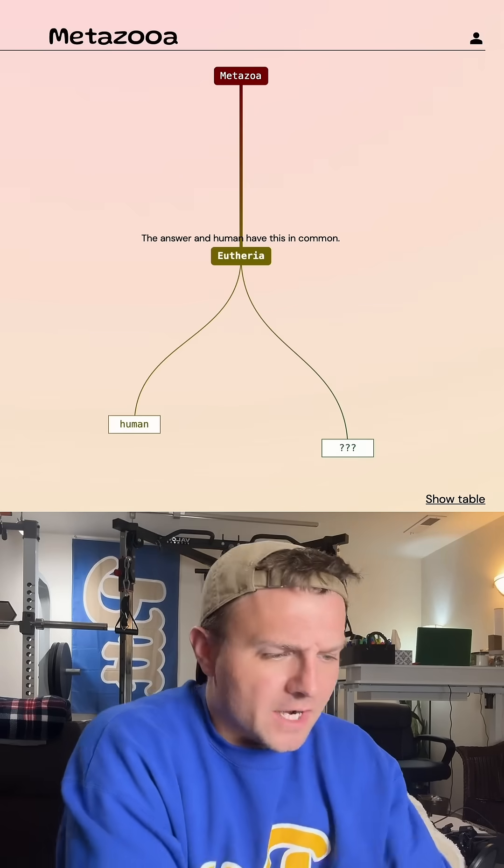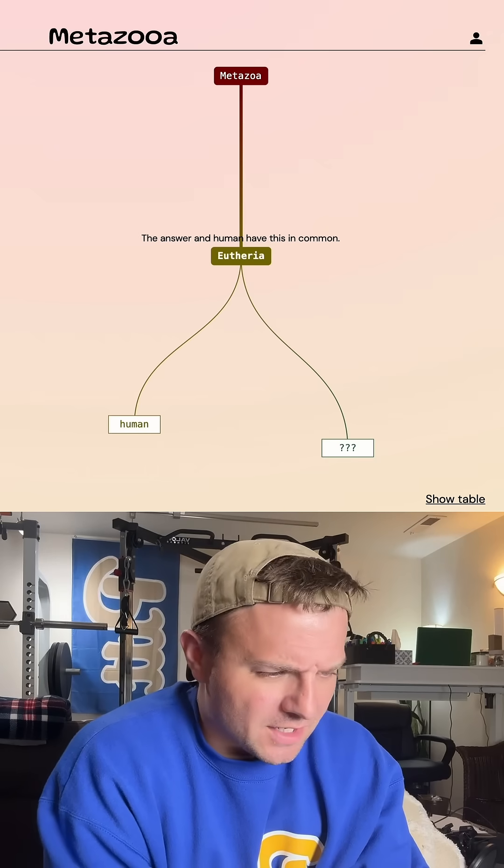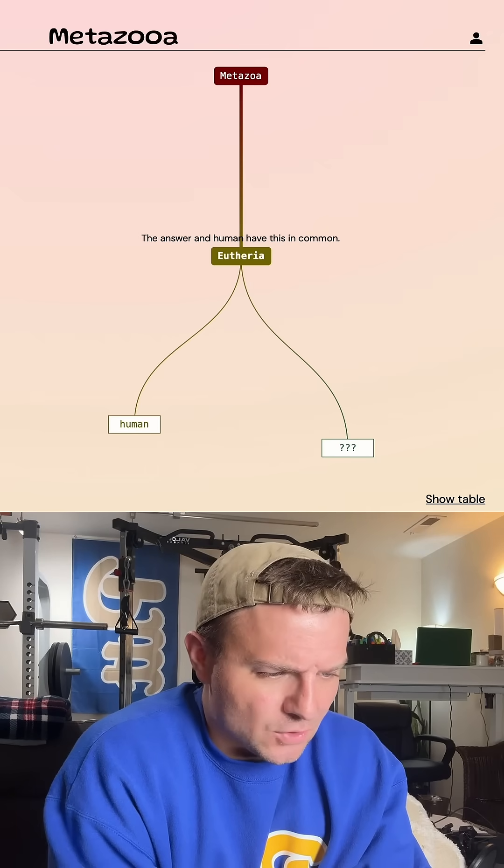Like always, we're going to start out with humans. Alright, so the grouping that this species shares with humans is eutheria. This means it's a placental mammal.